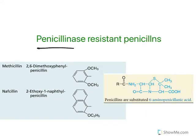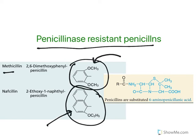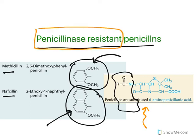Beta-lactamase or penicillinase resistance can also be achieved by increasing the side chain bulk. All isoxazolyl penicillins are penicillinase resistant, as is methicillin — which has a dimethoxyphenyl group. When there is a naphthalene substitution, it is nafcillin. Both of them, because of their increased bulk, cause steric hindrance so that beta-lactamase cannot break the ring. So all of them are called penicillinase-resistant penicillins.